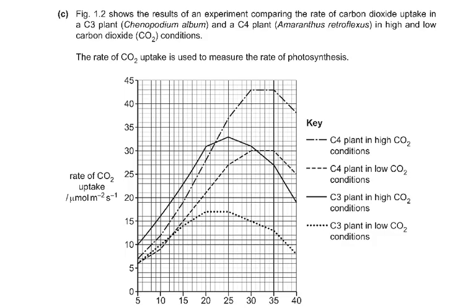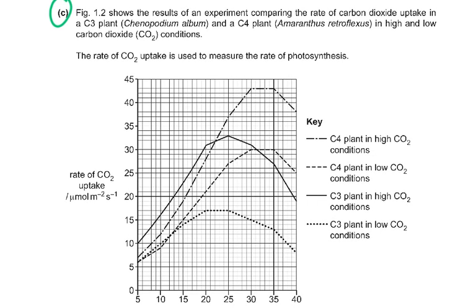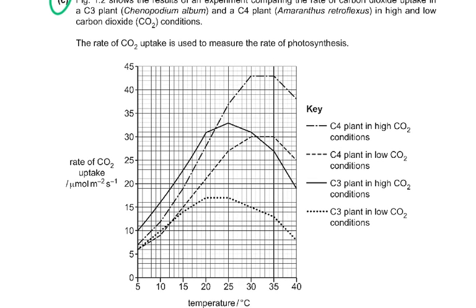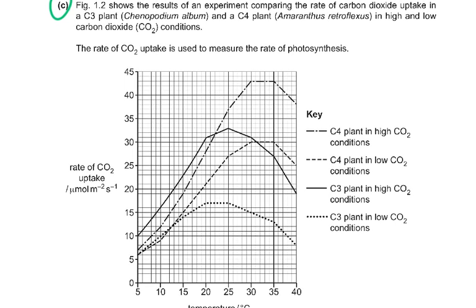Part C of the question: figure 1.2 shows results of an experiment comparing rates of CO2 uptake in a C3 plant and a C4 plant in high and low CO2 conditions. We have four graphs, and first you need to understand which graph is which. C4 plants in high CO2 — let's give that a different color.